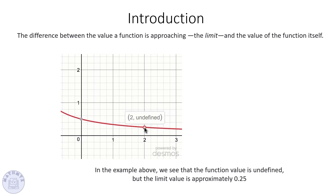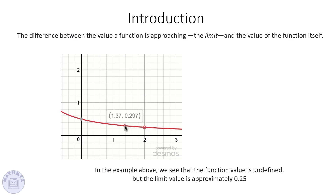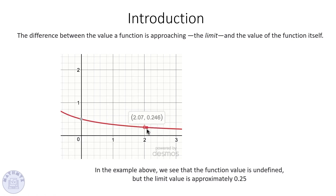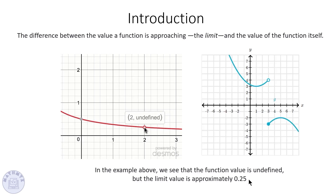The most important concept for today's lesson is to distinguish between the value of the function at some point and the approximation of the limit at the same point. When we find the value of the function, we substitute — for example, f(2) in this graph, which is undefined, as shown by the open circle. When we investigate the limit around the point, we approach from both sides — left and right — and this approximation is about 0.25. Sometimes we get different approximations from both sides, in which case we say the limit does not exist.